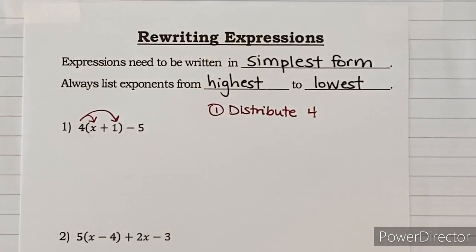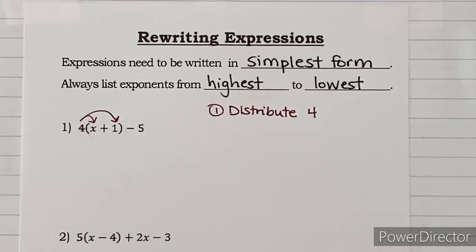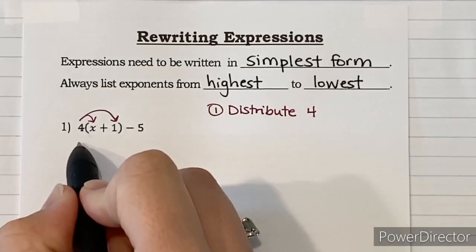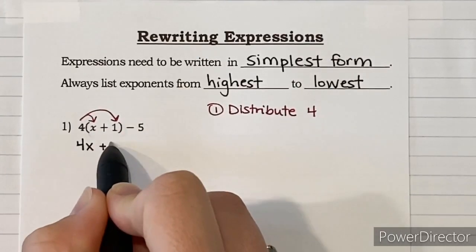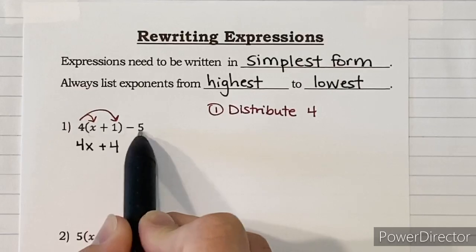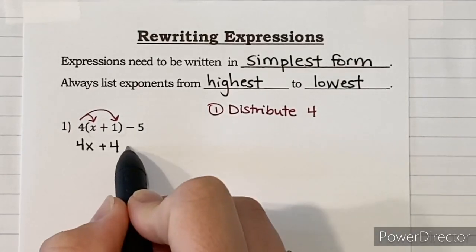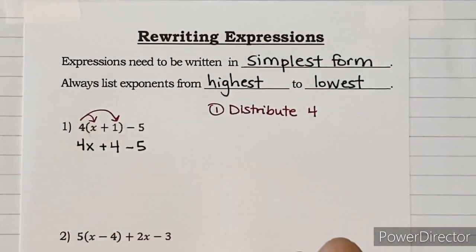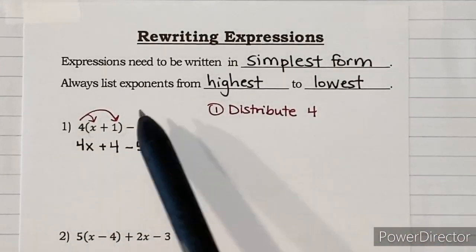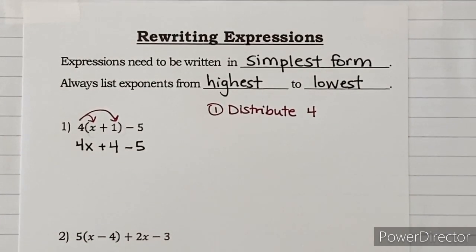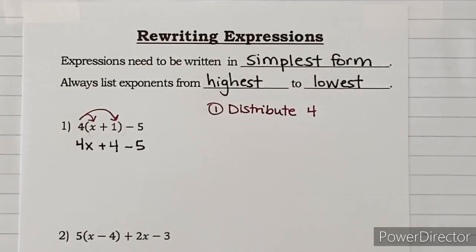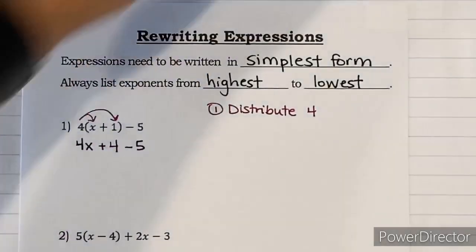When we distribute, it's just multiplication: four times x is 4x, and four times one is plus four. The minus five at the back — I didn't do anything to it, so I bring it straight down. Now I've gotten rid of the parentheses. There are no exponents, no multiplication or division left, so I move on to adding and subtracting, which is the same as combining like terms.